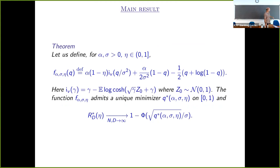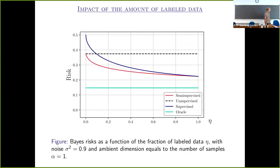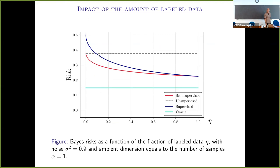Here is the general formula on the plots. This is a risk evaluated on the test set, not on the train. This is why, for example, the supervised algorithm on the labeled data only is performing worse than the unsupervised setting with a small label data regime — there should be no contradiction.